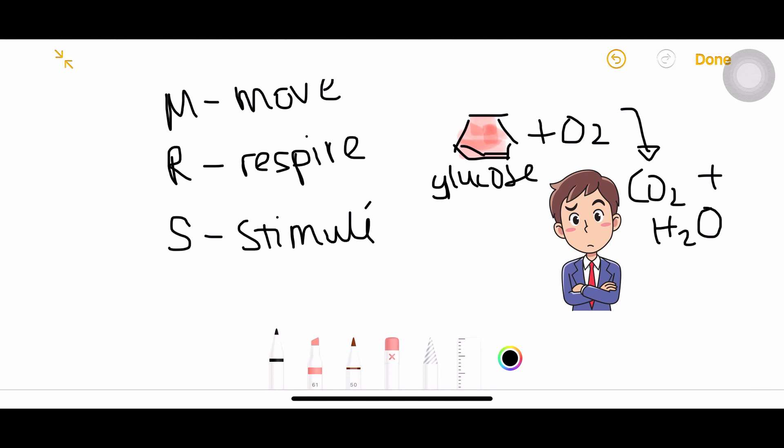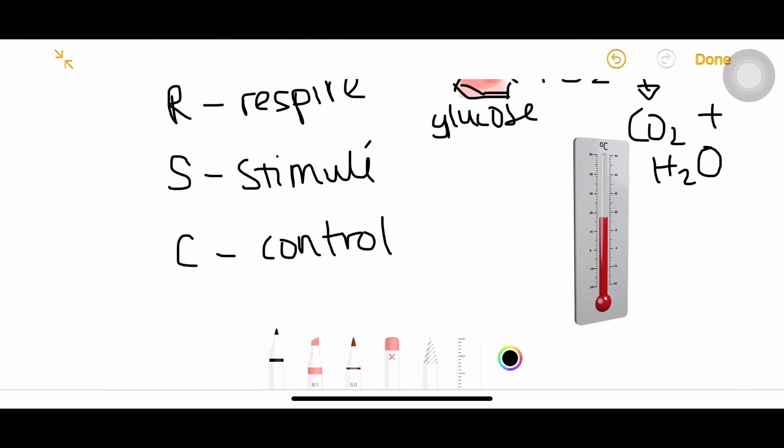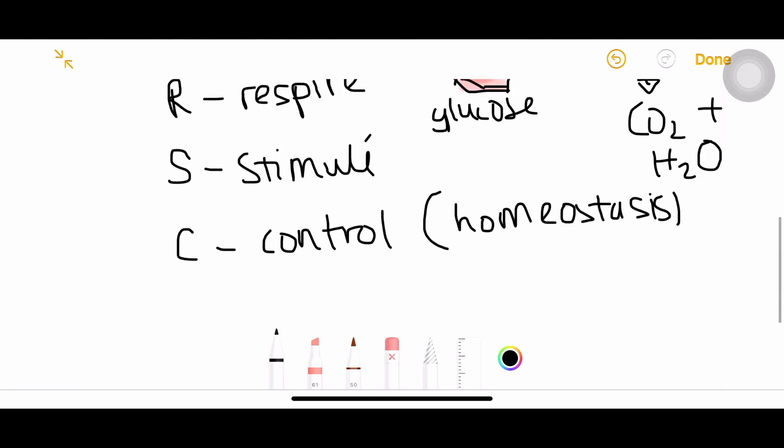C is for control - controlling all the internal conditions in your body, for example, temperature and water content. These are the most important functions that are controlled in your body. This also has another name, the correct name: homeostasis, controlling all the internal conditions. So in some examples, I have seen this as Mrs. H. Gren instead of Mrs. C. Gren, but you can learn it either way. It's correct.